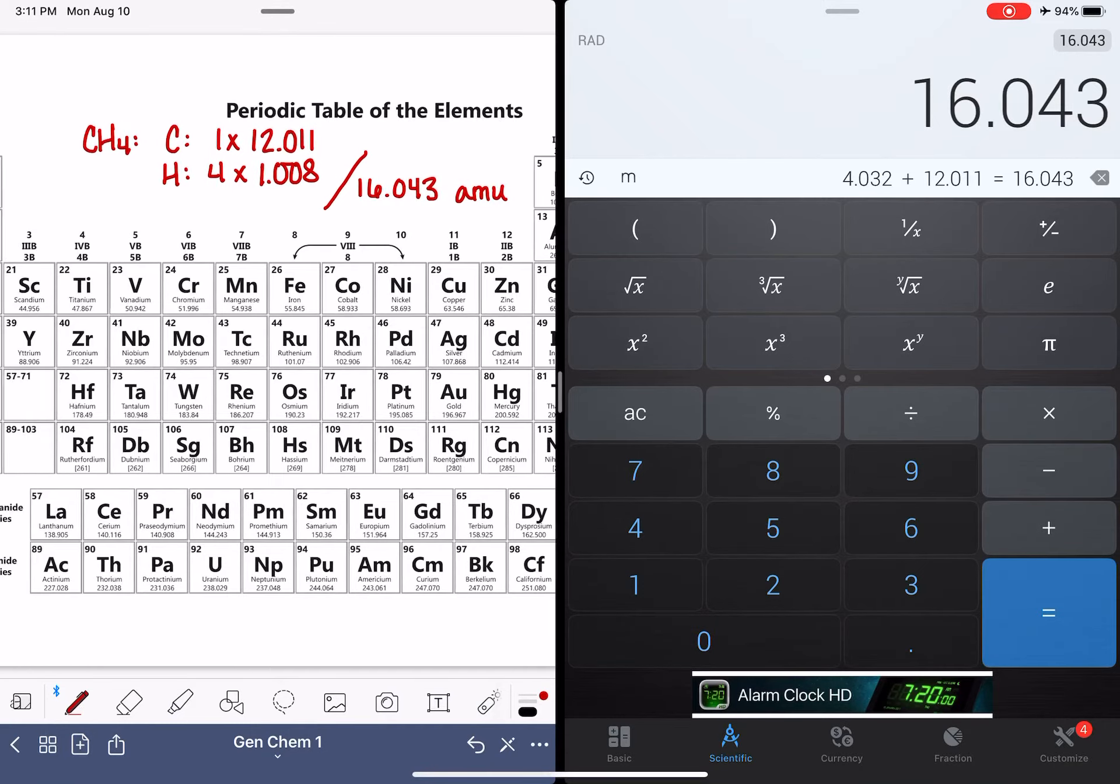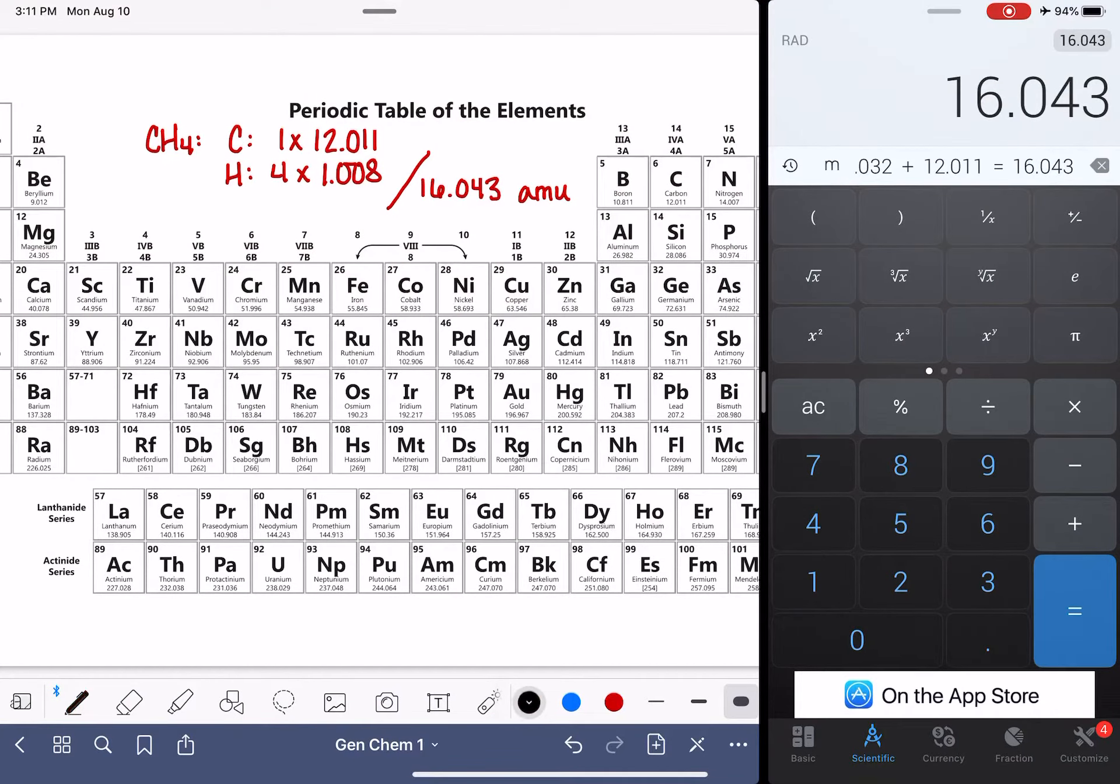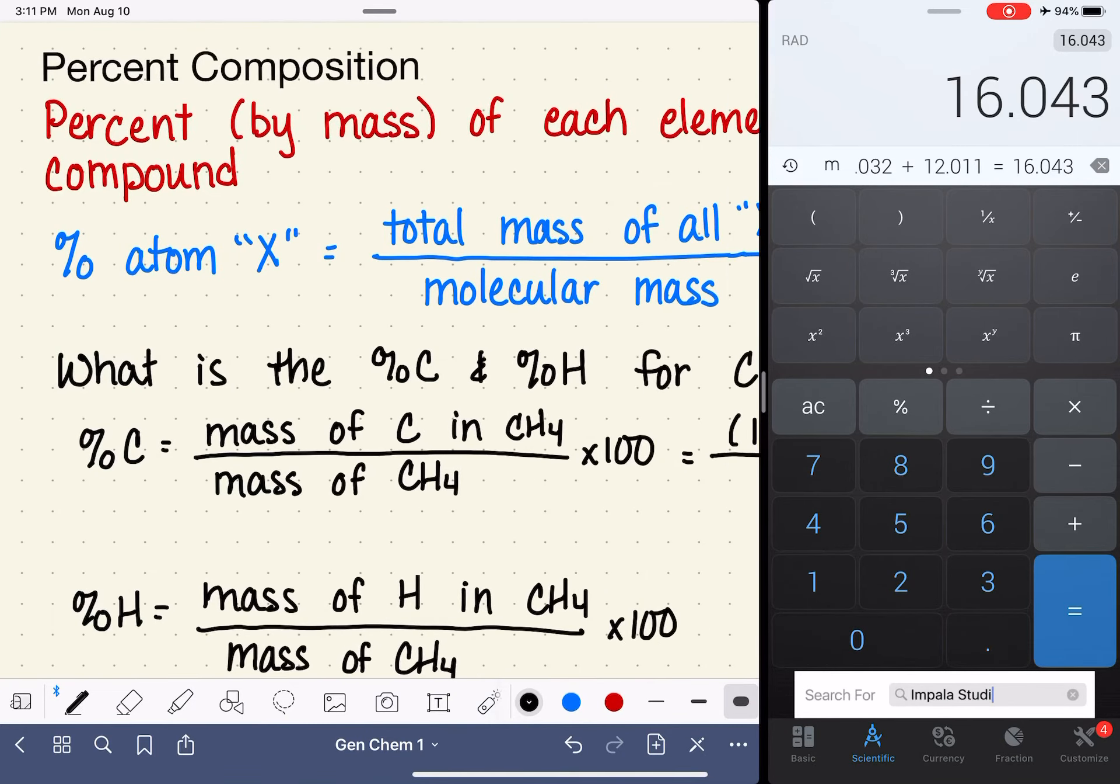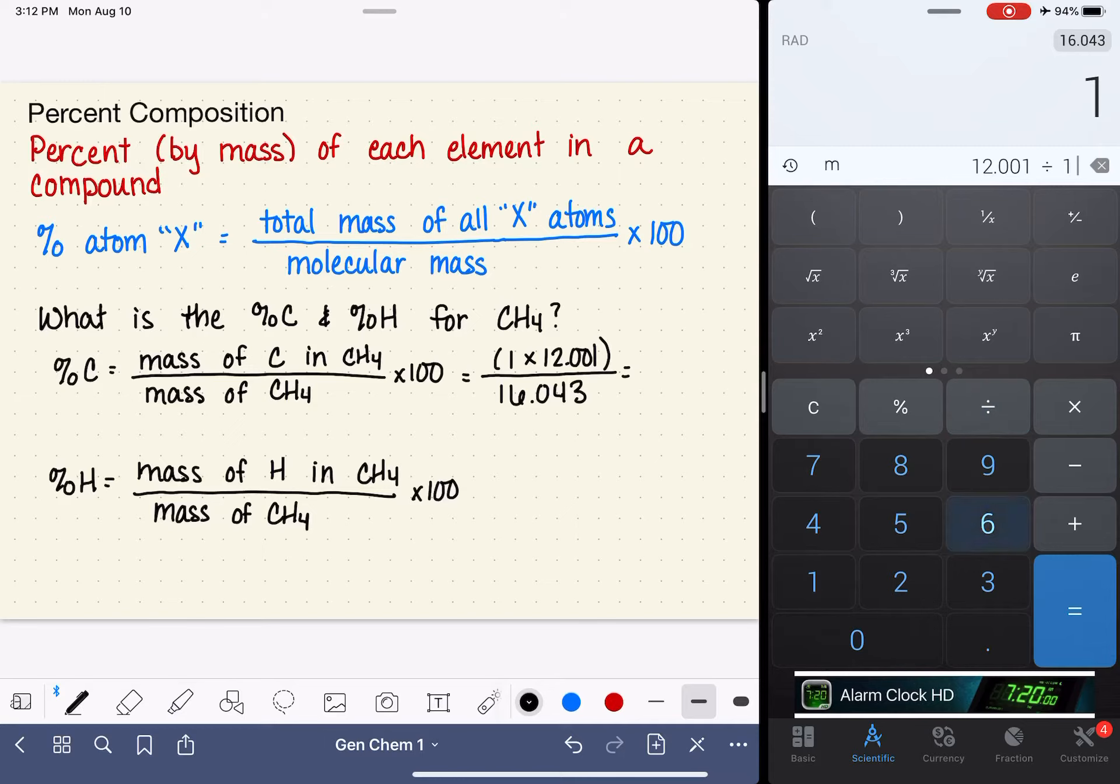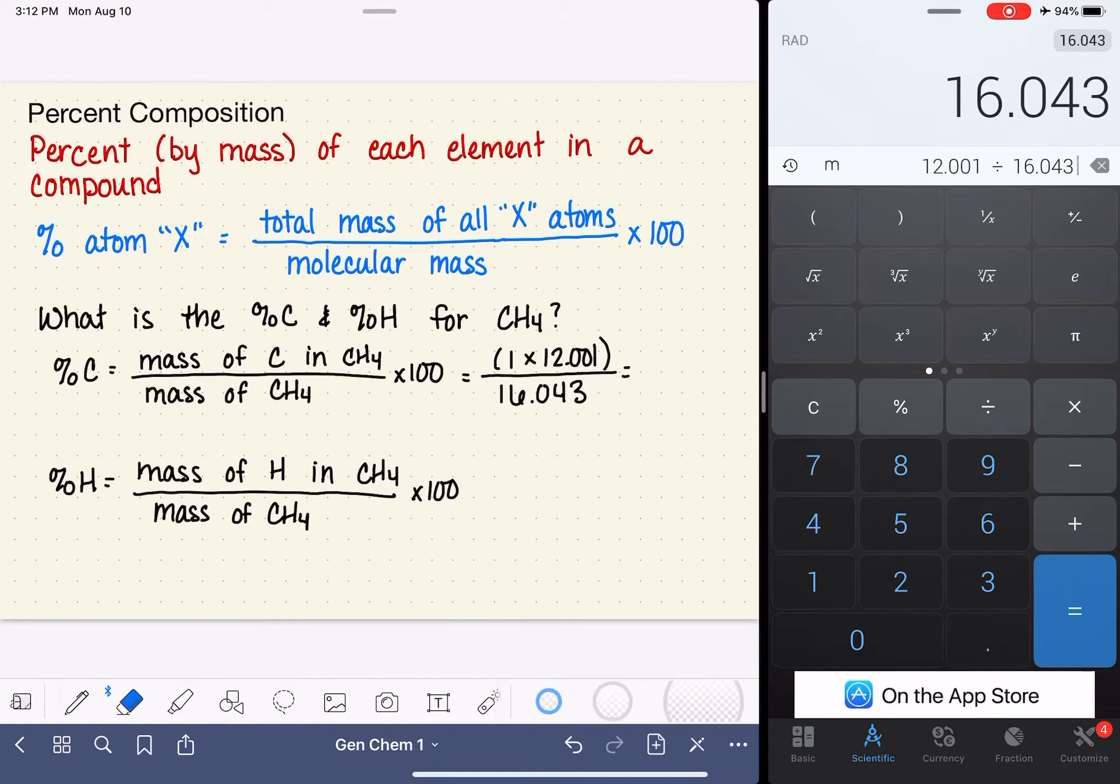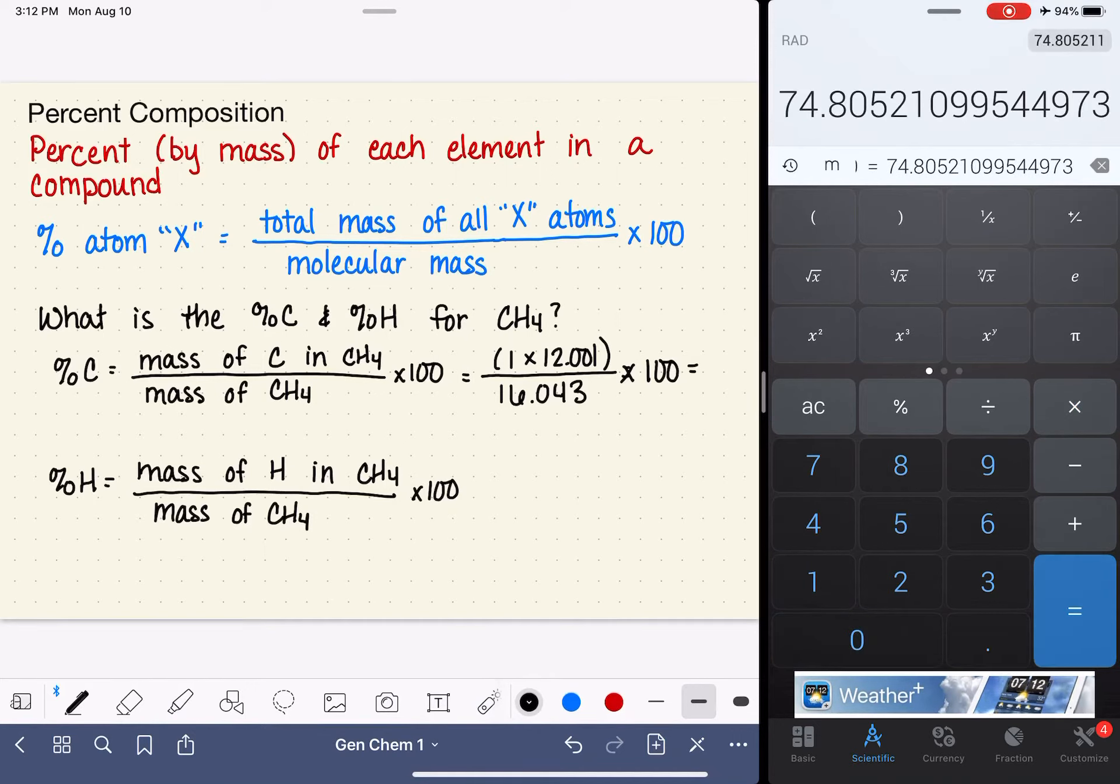Let's take this number back to the problem that we're working on, 16.043. We'll go ahead and work this math out. 12.001 divided by 16.043, we have to multiply by 100. This is 74.81% carbon because we're talking about the carbon atoms.